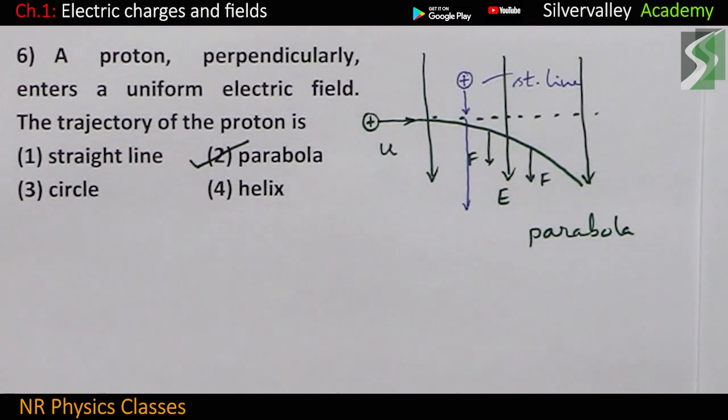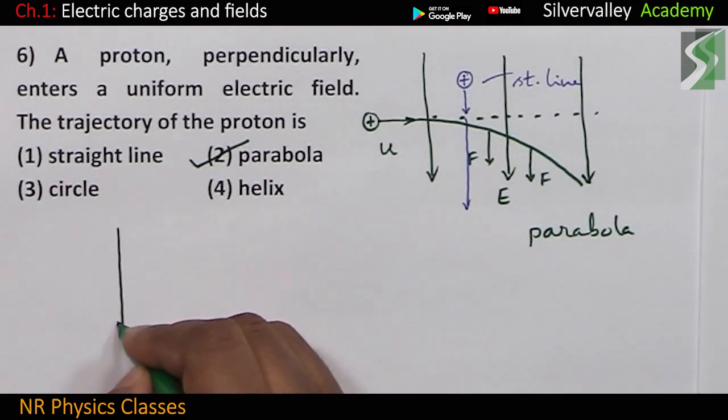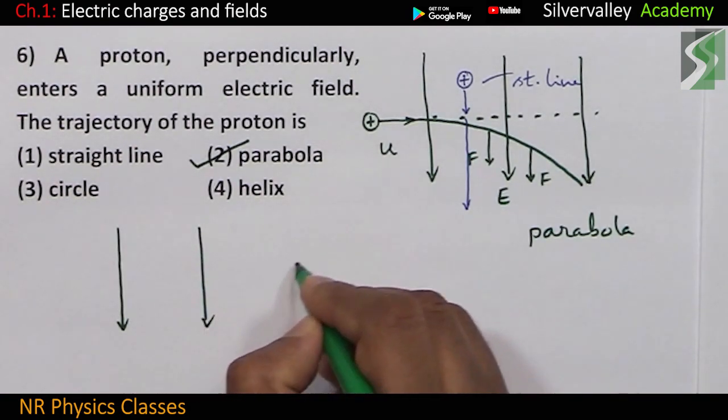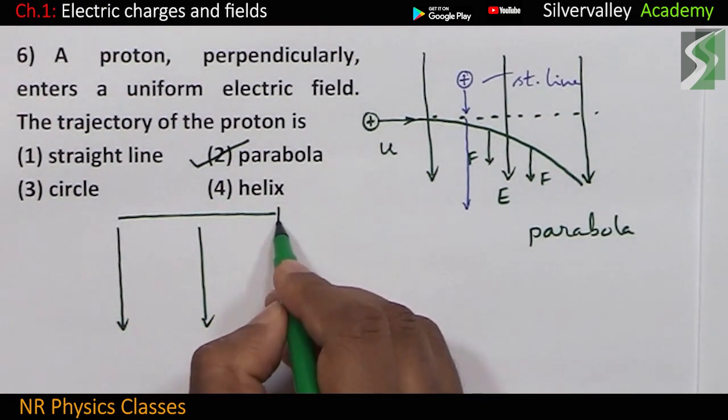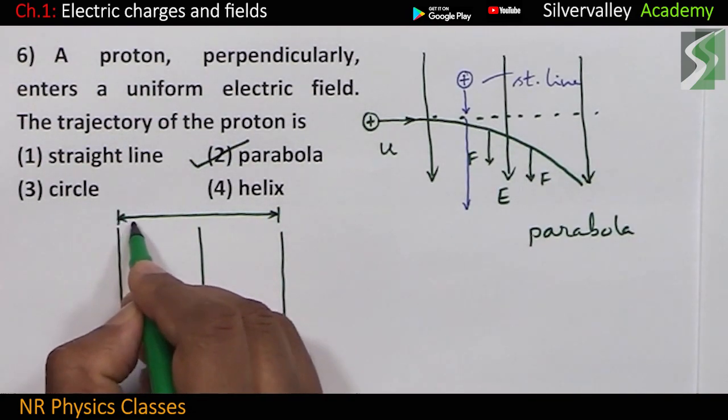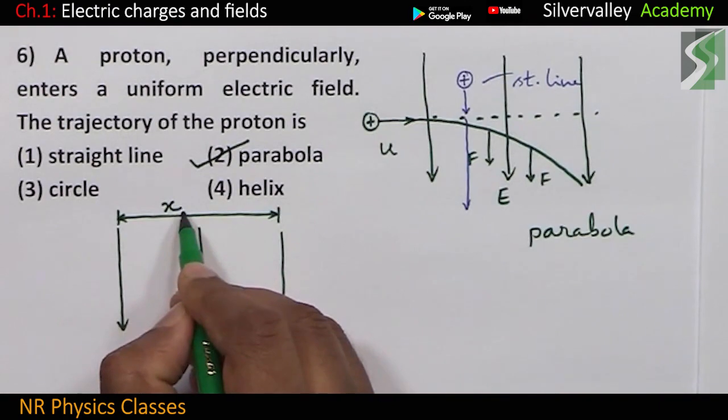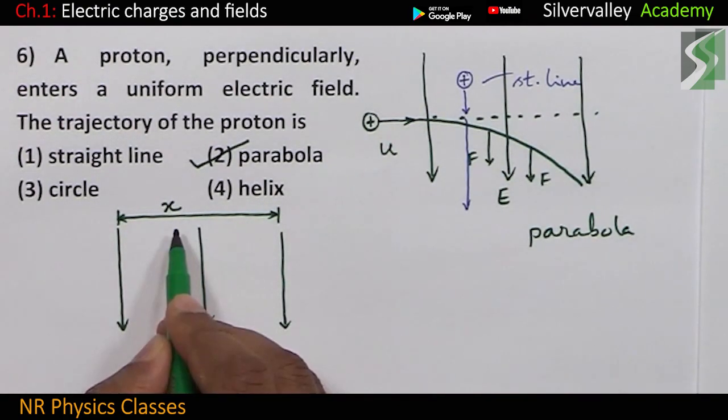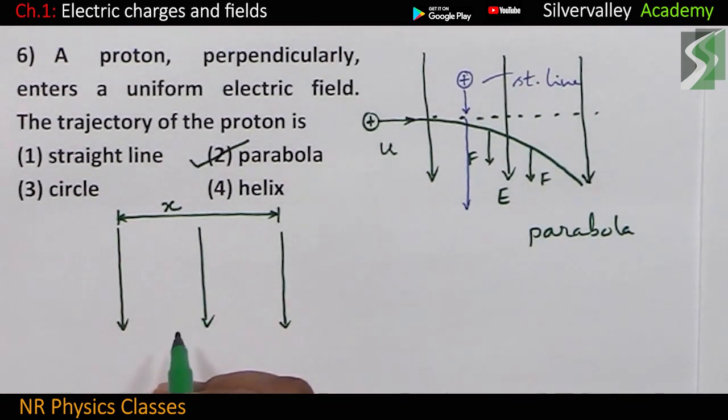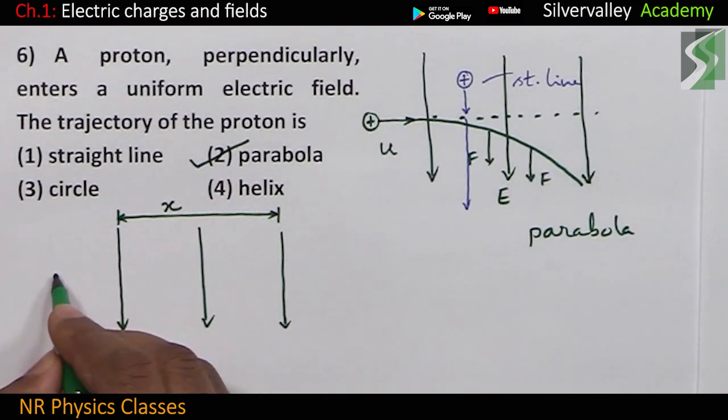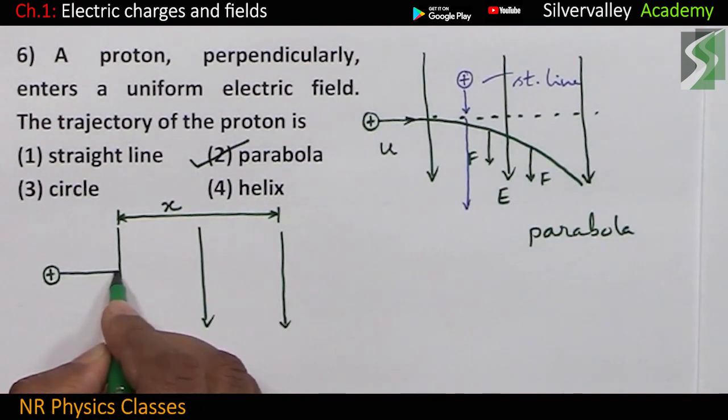Now, let us see why it is parabola. Let this be uniform electric field. Let us see why it is parabola. Length of the electric field is x, okay. A proton positively charged, let it enter this uniform electric field with velocity U.